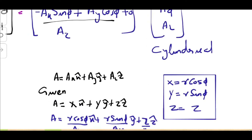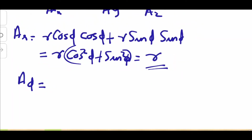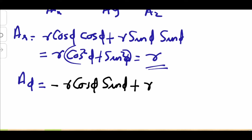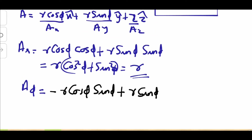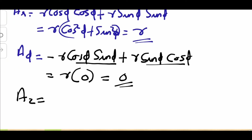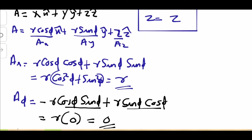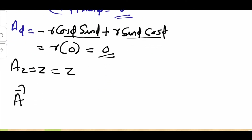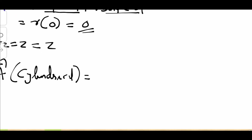A-phi equals −Ax sinφ + Ay cosφ = −R cosφ sinφ + R sinφ cosφ. These two terms cancel each other, so A-phi equals zero. Az is just z, so Az equals z.